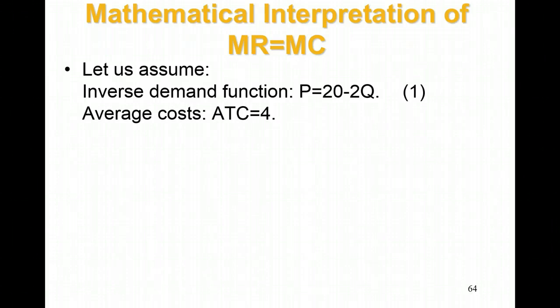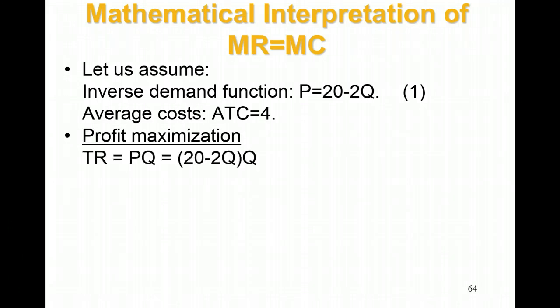For profit maximization, we have to set marginal revenue equal to marginal cost. The first thing I'm going to do is determine marginal revenue. To determine marginal revenue with the information I have, I first need to calculate total revenue.